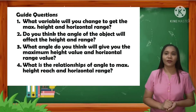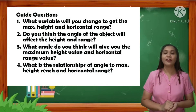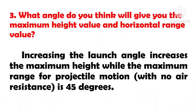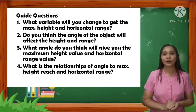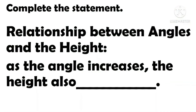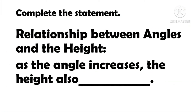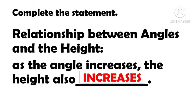What angle do you think will give you the maximum height value and horizontal range value? Increasing the launch angle increases the maximum height, while the maximum range from the projectile motion with no air resistance is at 45 degrees. What is the relationship of angle to maximum height reached and horizontal range? Can you complete the statement? As the angle increases, the height also increases. Yes! Increases! Good job!